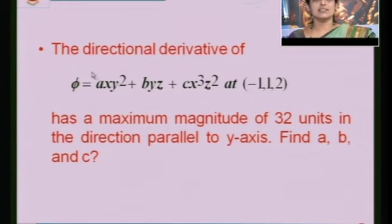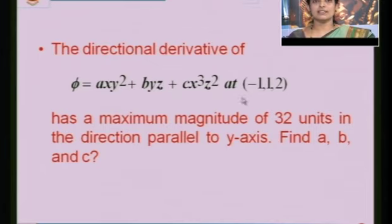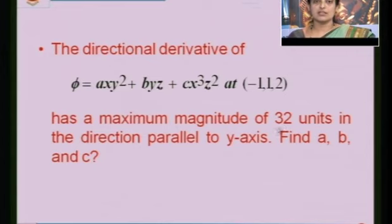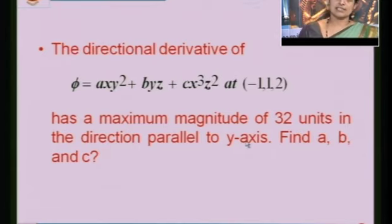Now a different type of question. The directional derivative of φ = Axy² + Byz + Cx³z² has a maximum magnitude of 32 units in the direction parallel to the y-axis at a given point. Find A, B, C.